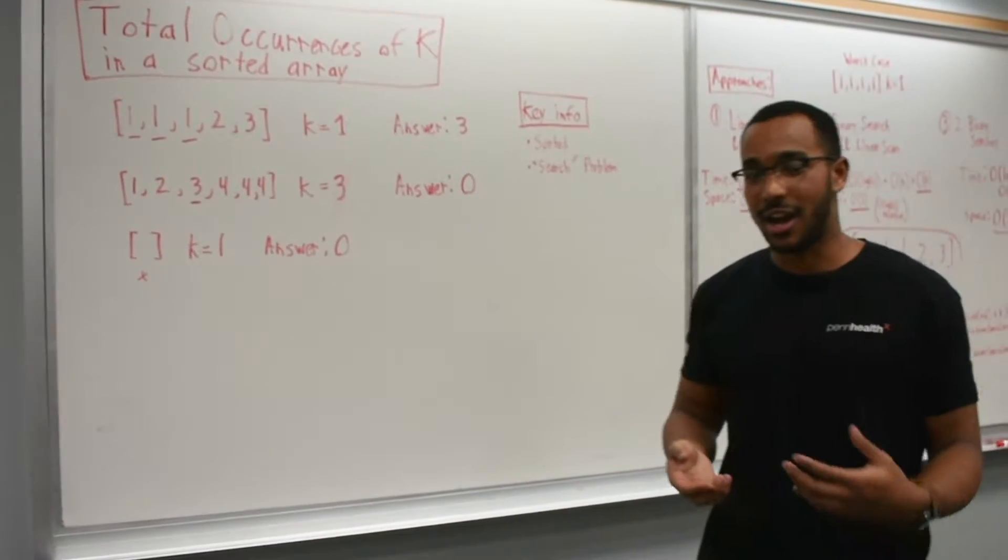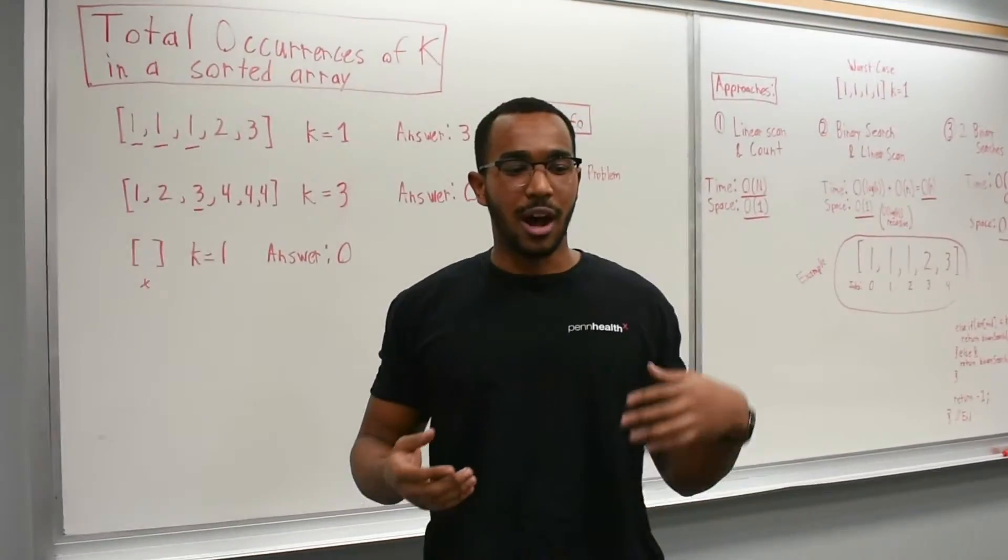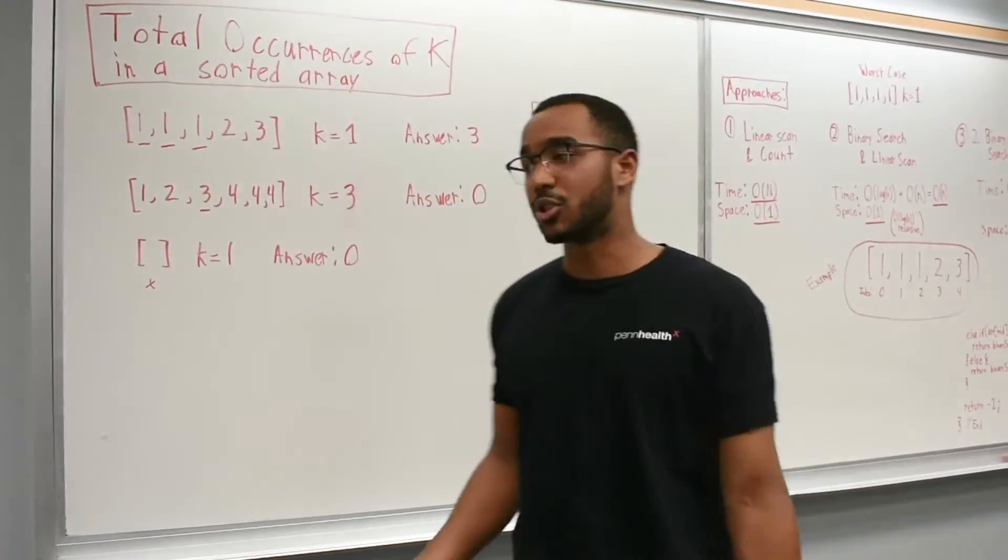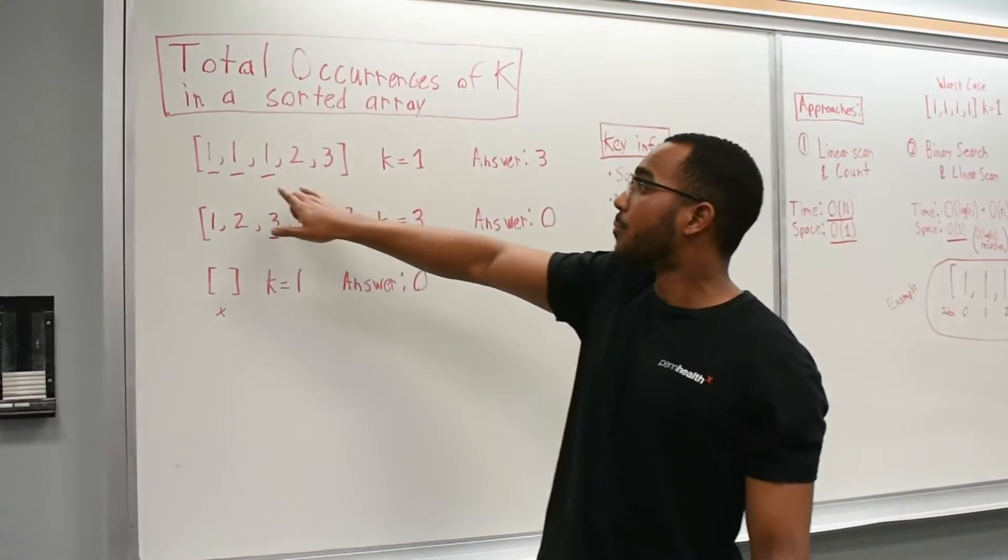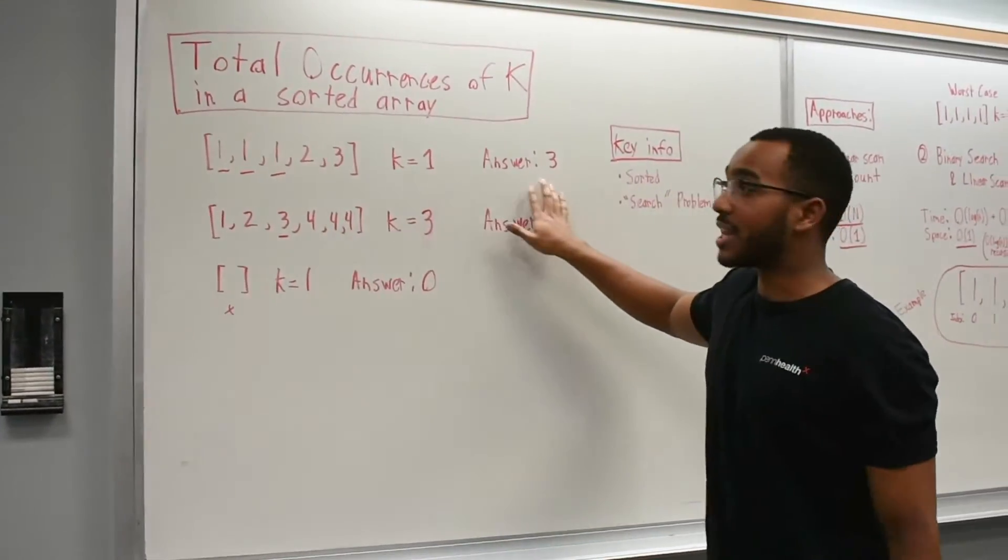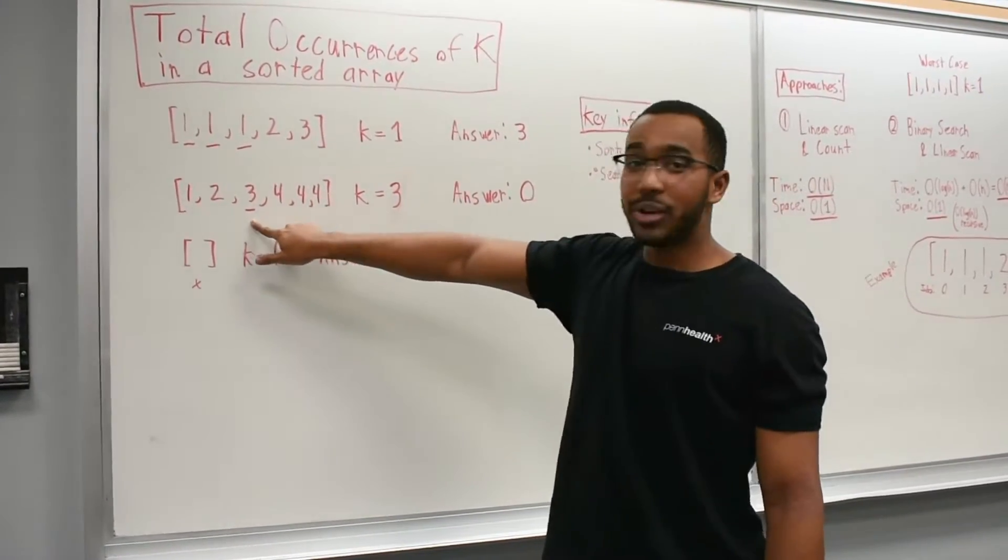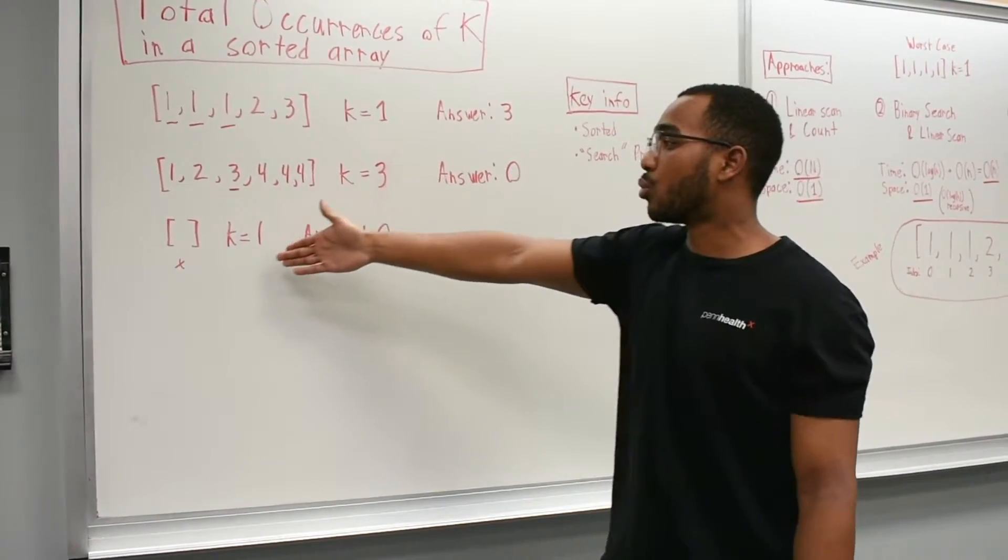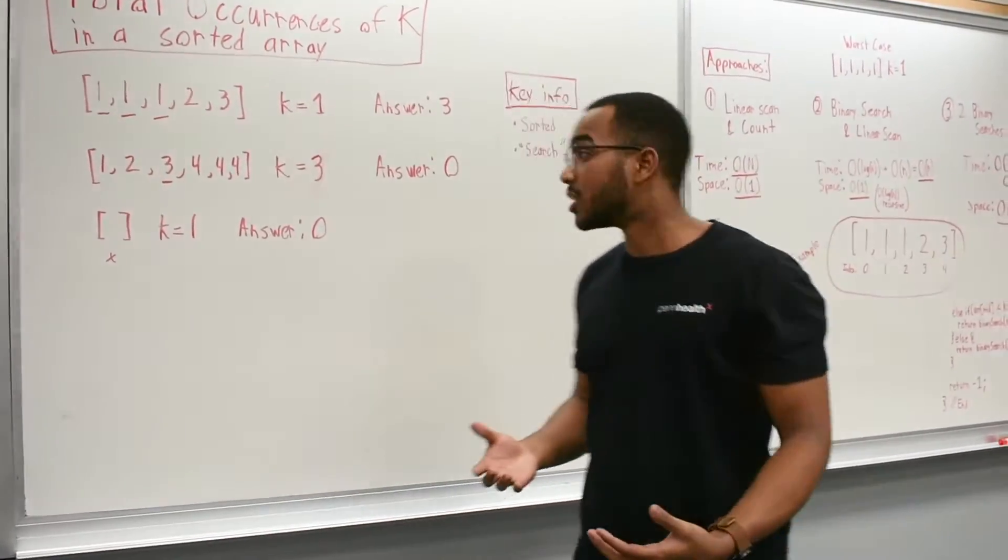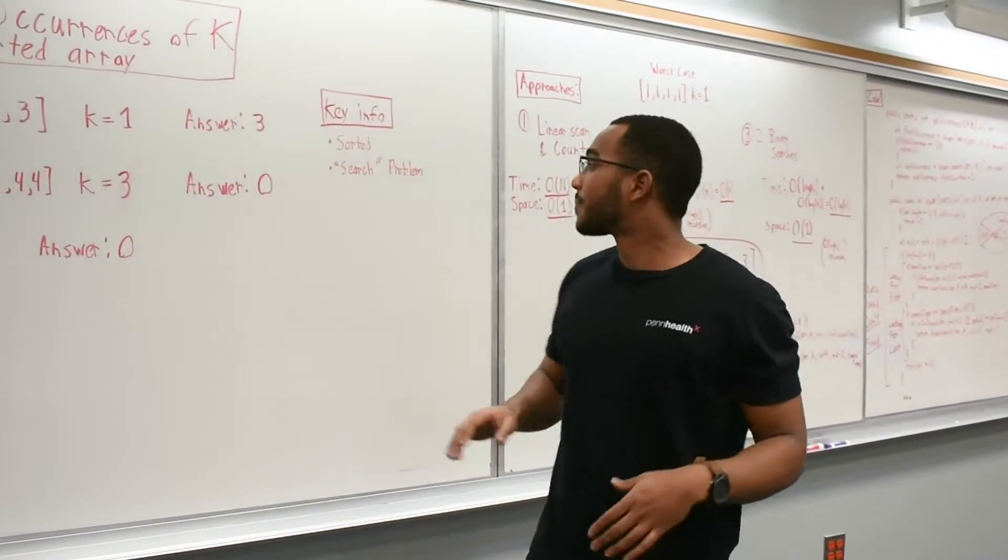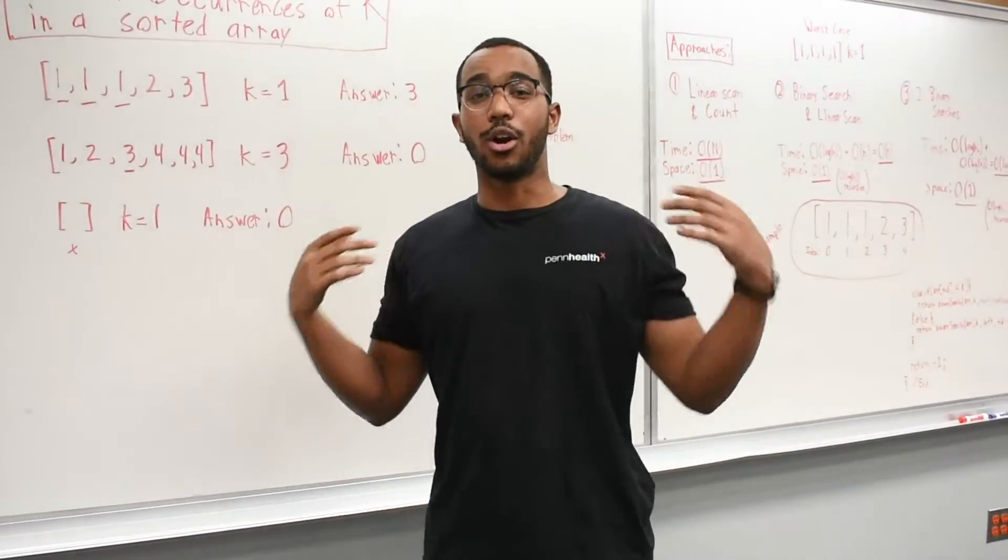All right. So today we're going to do the question total occurrences of K in a sorted array. So like I said, this is a question I got during Facebook interviews. And it's actually a really good question that demonstrates the process of walking through from a bad solution to the most optimal solution. So for example, we have three cases here. We have an array here and K equals one. So we return the answer is three. We see that one occurs three times. K is one. It occurs three times. K is three. Three occurs one time. K is one. It's an empty array. So the answer is zero. So the key information in this question is the array is sorted and it's a search problem. These are two key things we're going to have to factor in when we're factoring in our approaches.